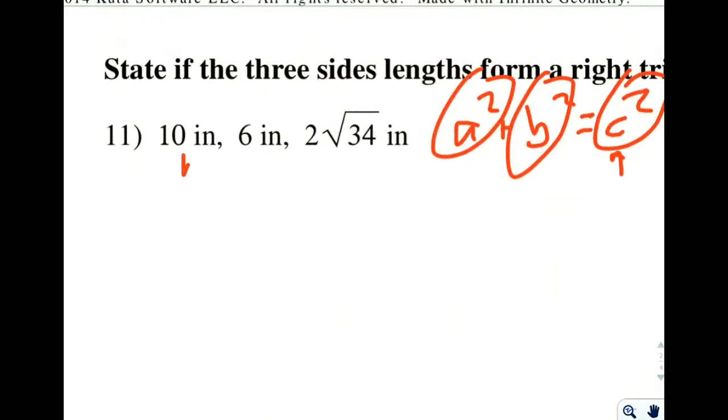So the first one here, if we square it, we have 10 times 10, which is 100. Second one, if we square it, is 36. And the third one, if we square it, is complicated.